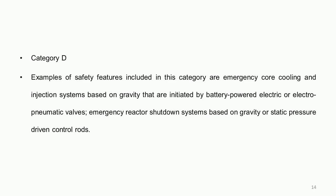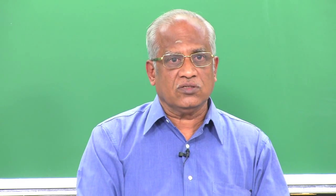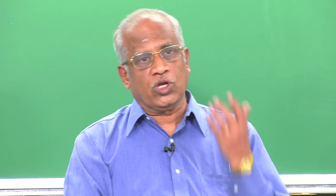Category D, the least passive, essentially includes battery-powered electric or electro-pneumatic valves, or emergency shutdown systems based on control rod drives falling under gravity — but they do require a signal for actuation, which is the major distinguishing factor.